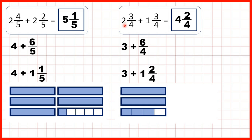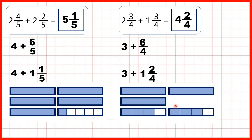Then we had 2 and 3 quarters — 2 wholes and 3 quarters — and we were adding 1 and 3 quarters. When we put the quarters together we got 6 quarters, but we knew that we couldn't write 3 and 6 quarters as our answer. Instead we needed to change 4 of those quarters into 1 more whole, so adding the fractions gave us 1 and 2 quarters. When we add that to the 3 wholes from adding the whole numbers in our question, that gave us our answer 4 and 2 quarters, and you can see that we now have 4 whole fraction bars and 2 quarters of another one.